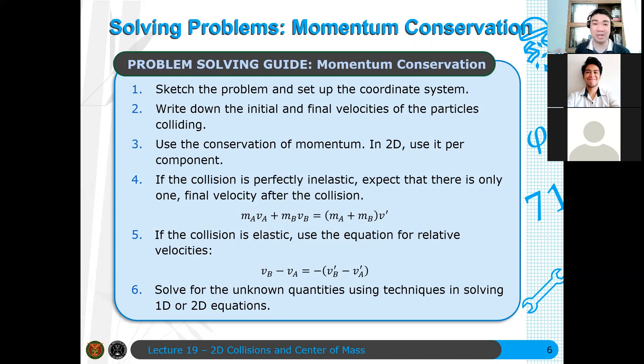You just need to know the directions of your velocity vectors so you don't get confused. For 2D, you need to draw more because sometimes the conventions on what the directions are can be confusing. Important here are positive X and positive Y. Then we write down the initial and final velocities of the particles colliding. Then we use conservation of momentum.